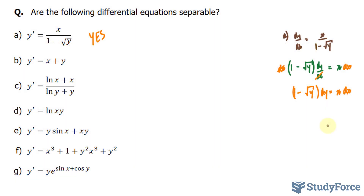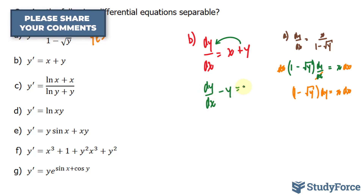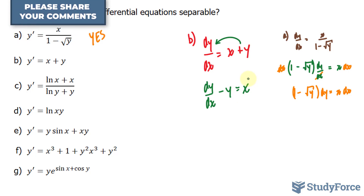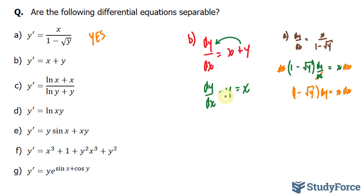Moving on to question (b), we have y prime is equal to x plus y, which I'll rewrite as dy over dx is equal to x plus y. Notice that no matter what we do here, we can't separate the x and y terms. For example, if I move the y over, we end up with dy over dx minus y is equal to x. Multiplying both sides by dx, the dx disappears in one term but reappears in another. So this one is not separable.